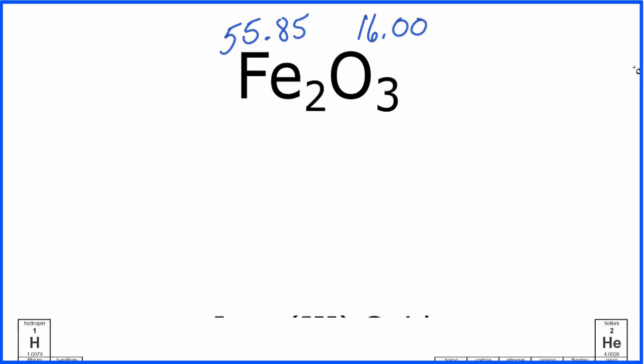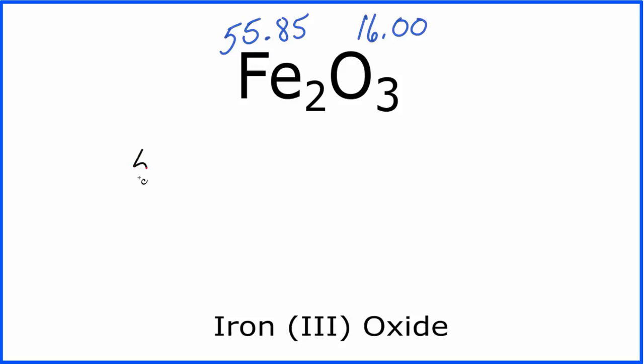So once we have these masses for the individual elements, let's take into account our subscripts here. So I have 55.85, and then this 2 here, I need to multiply this number by the 2, that subscript there. So I multiply that by 2.